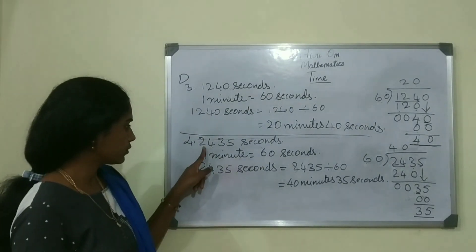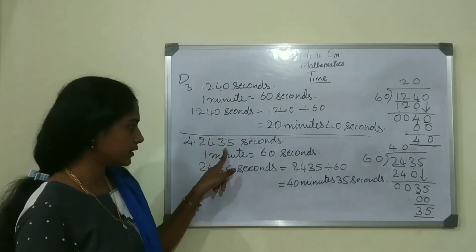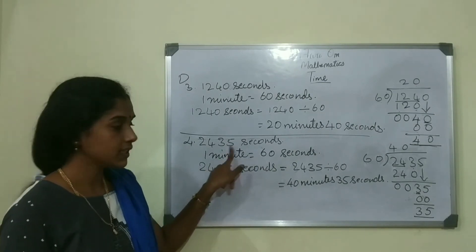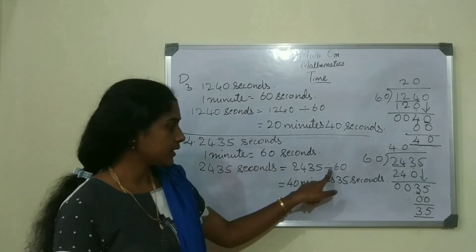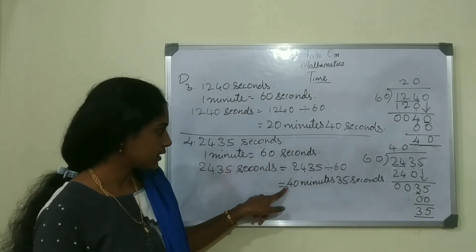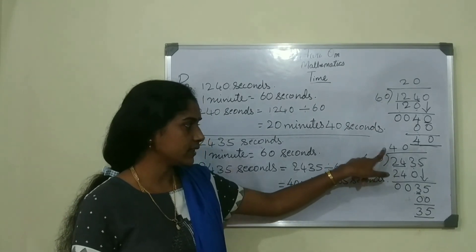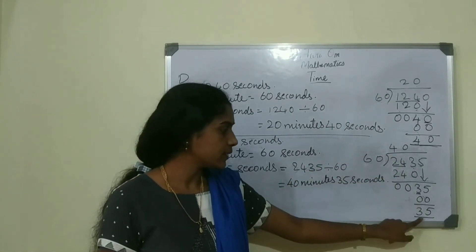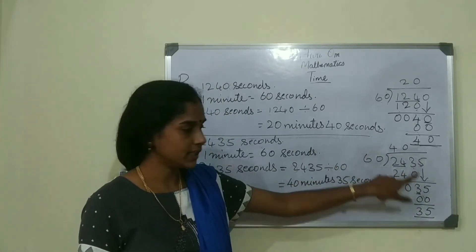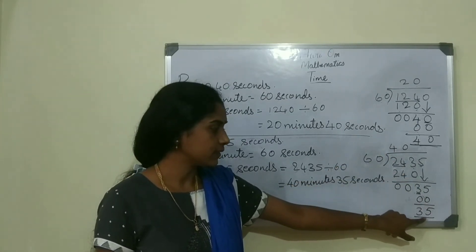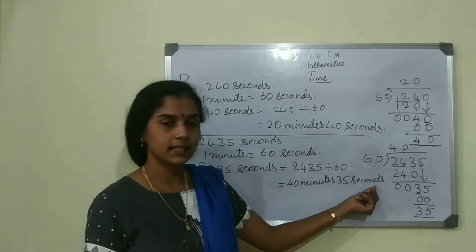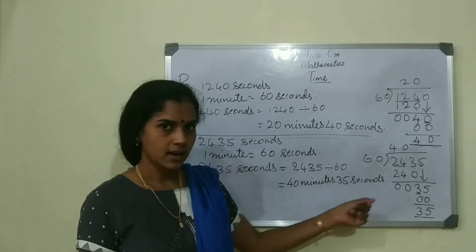To convert 2,435 into minutes, we divided by 60. After dividing, the quotient is 40 and the remainder is 35. The quotient is the minutes and the remainder is the seconds. So 40 minutes 35 seconds is the answer.